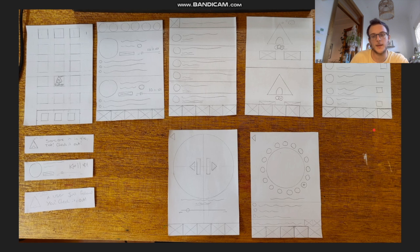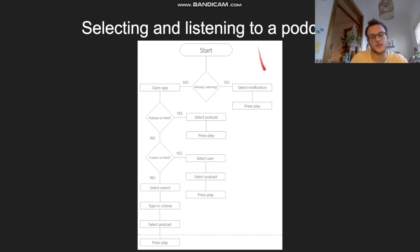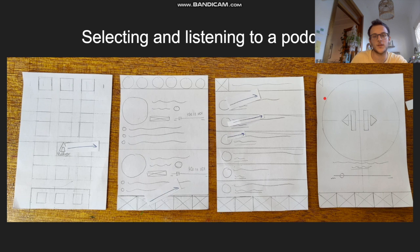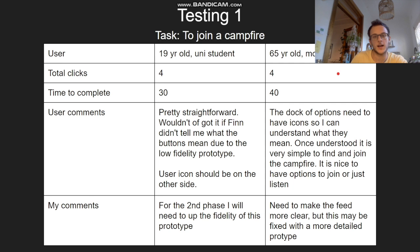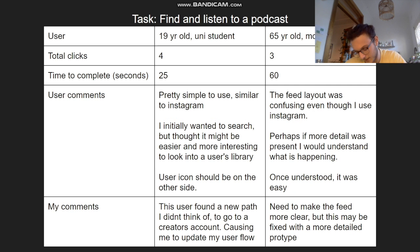Here are some images of my paper prototype. Here's a user flow of joining a campfire — you can see it's very straightforward. And here's a user flow of selecting and listening to a podcast. Those are my two tasks for today. Testing showed that both users had a quick ability to finish these tasks, around 35 seconds. The biggest issue for both users was that the prototype was too low fidelity, so it was very important to make it higher fidelity and more usable. For the second task, it was about four clicks and 30 to 40 seconds.